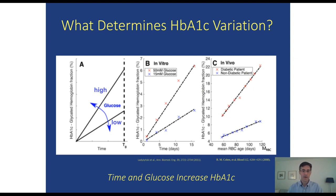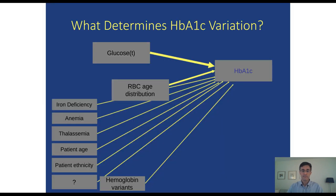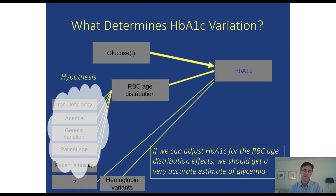There are many other proposed contributions to A1c variation. Evidence in the literature shows that iron deficiency, anemia, patient age, ethnicity, thalassemia, thalassemia carrier status, and hemoglobin variants are all associated with differences in A1c independent of glucose. I'd like to suggest that many of these factors exert their effect by altering the red cell age distribution — the mean red cell age. If we can estimate mean red cell age accurately, we might adjust A1c for this non-glycemic effect and get a much more accurate estimate of average glucose.